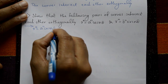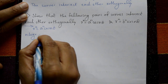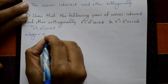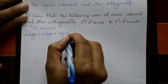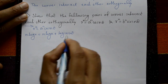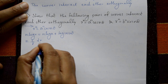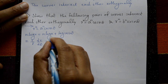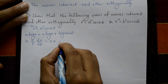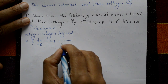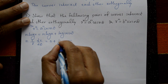Taking log on both sides: n·log(r) = n·log(a) + log(cos(nθ)). Now differentiate with respect to θ, so n·(1/r)·(dr/dθ) equals 0 plus differentiation of log(cos(nθ)).